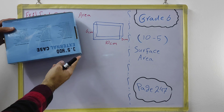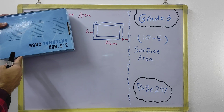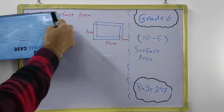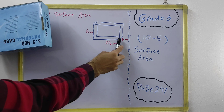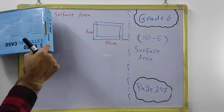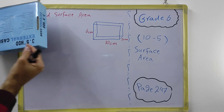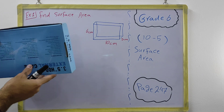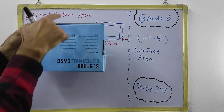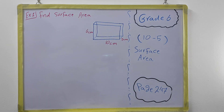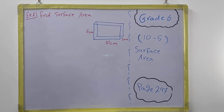Here we have dimensions: 10, 6, and 2 — these distances are given. The rectangular prism has six faces: one, two, three, four, five, six — back and front, up and down, left and right. We calculate the area of all the faces.